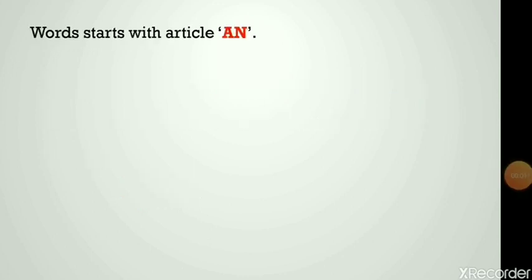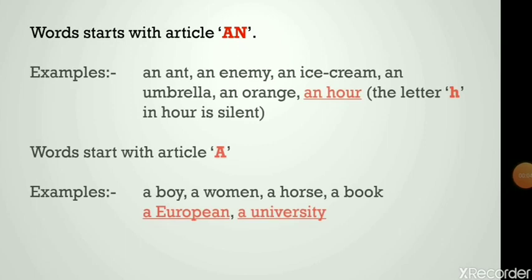Words that start with article 'an': for example, an ant, an enemy, an ice-cream, an umbrella, an orange, an hour. H is a consonant. Why is 'an' used before it? Because the letter h in 'hour' is silent.